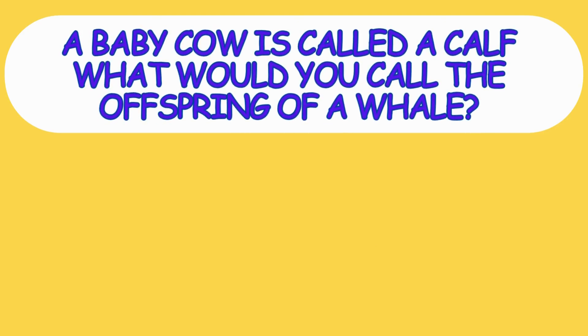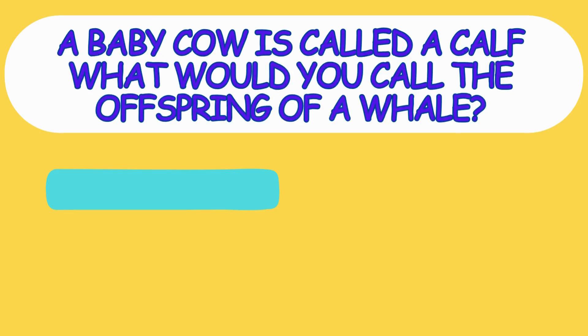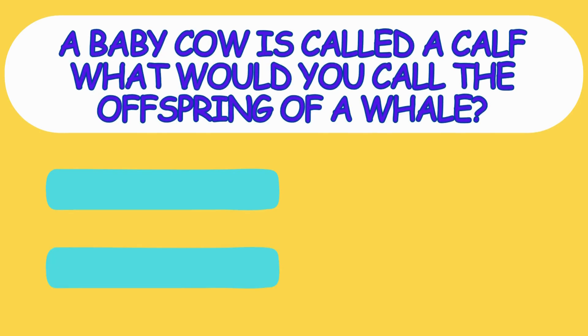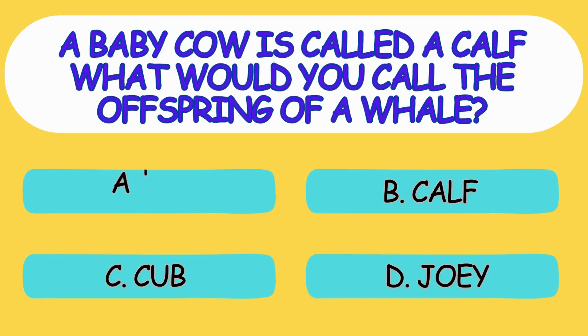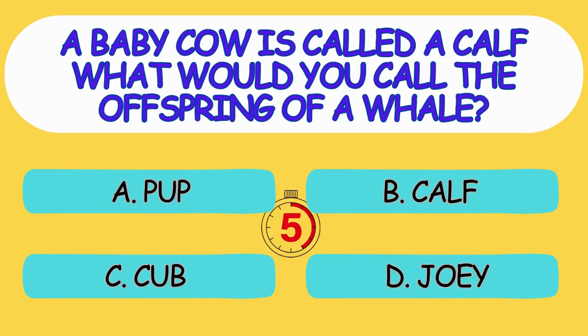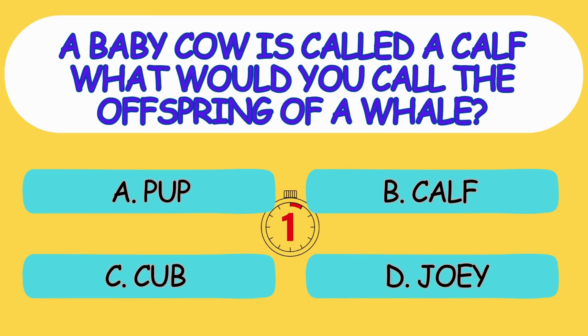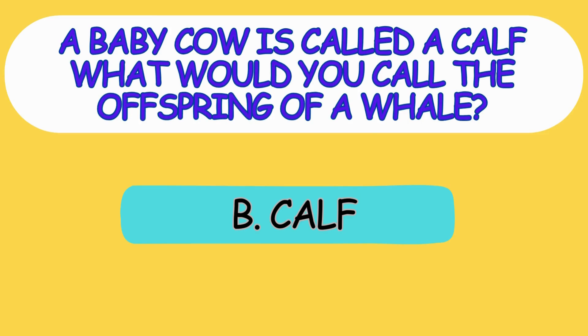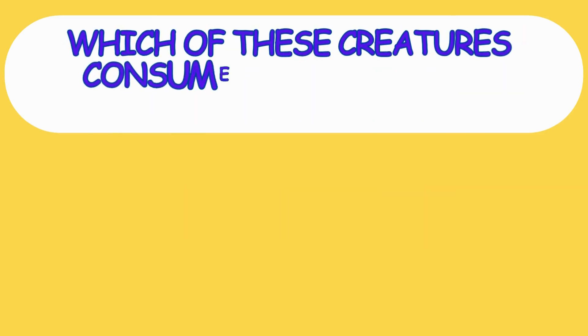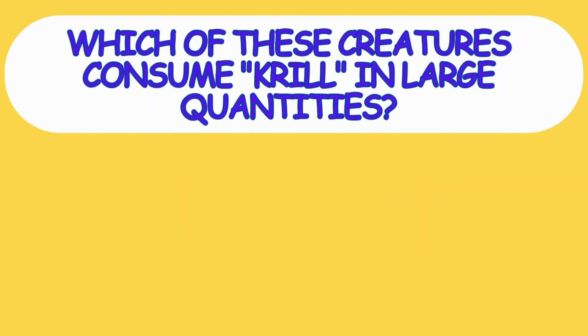A baby cow is called a calf. What would you call the offspring of a whale? A. Pup, B. Calf, C. Cub, D. Chewy. The answer is option B, Calf.